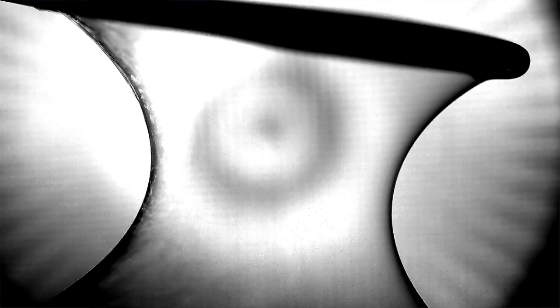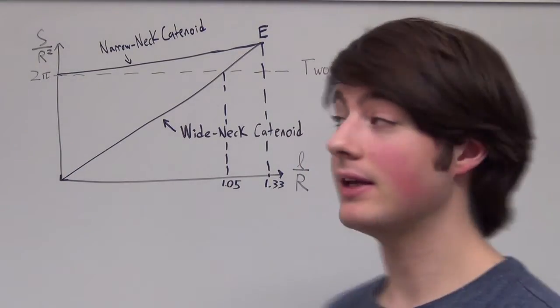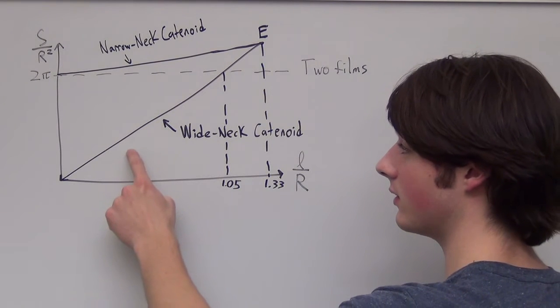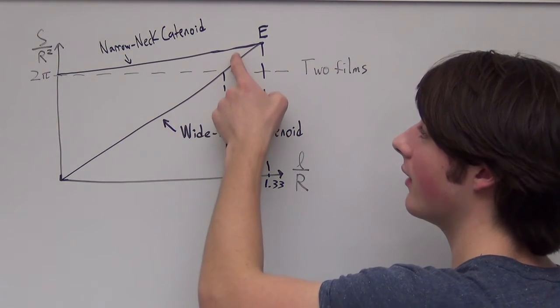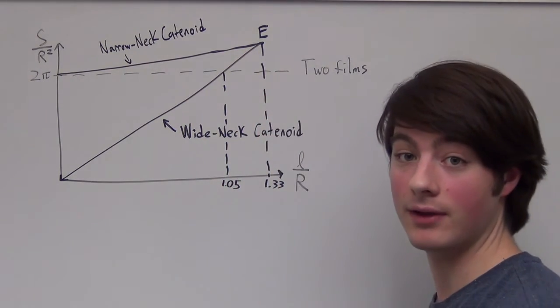What we actually see is that as the separation distance gets larger, we actually hop up from the wide neck catenoid to the narrow neck catenoid, and then we collapse down to the two films.